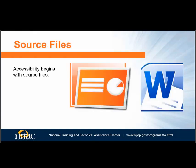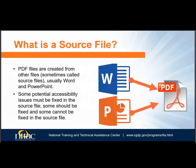Let's first talk about source files. Accessibility begins with accessible source files — for instance, files created in Word or PowerPoint. PDF files are never created as PDF files; you need some sort of source file, such as Word or PowerPoint, and convert it to a PDF file. Other possible sources are Excel, InDesign, and HTML, but this training does not cover those source files.